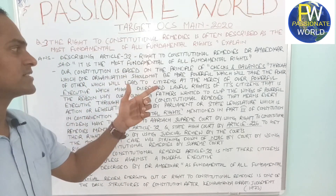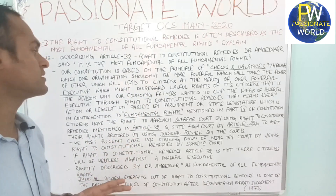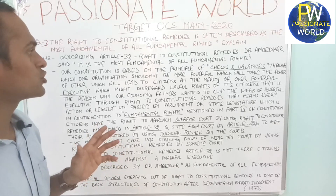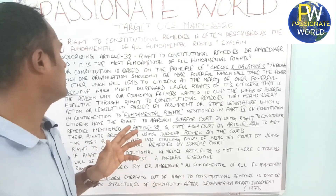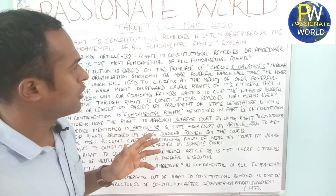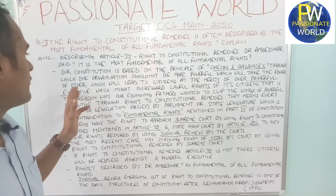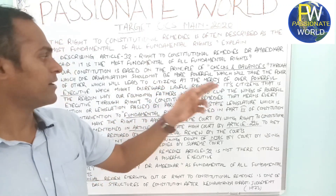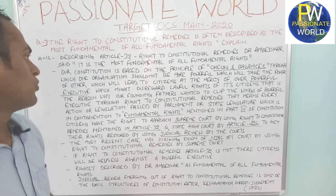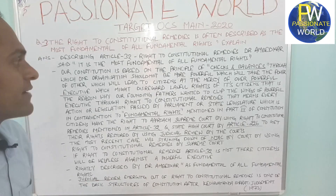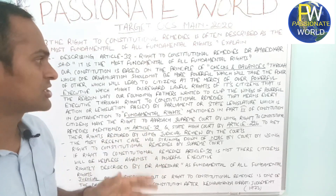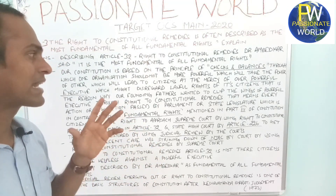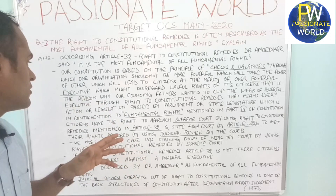Our constitution is based on the principle of checks and balances, so no organization should be more powerful than others — taking the power of others — which would leave citizens at the mercy of a very powerful executive that might disregard their lawful rights. That is the reason our founding fathers wanted to clip the wings of a powerful executive.